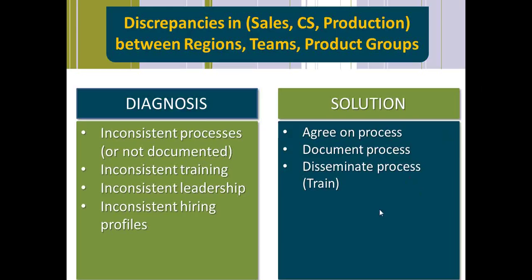It could also be product knowledge that needs product knowledge training, or maybe just individual skills. People within a region may need customer service training, sales training, safety, production, or continuous improvement training. Data is a wonderful way to compare regions, teams, or divisions and start to look for symptoms. If one region or team's data is showing that they are excelling, you have to start looking at that as a symptom for the other people.